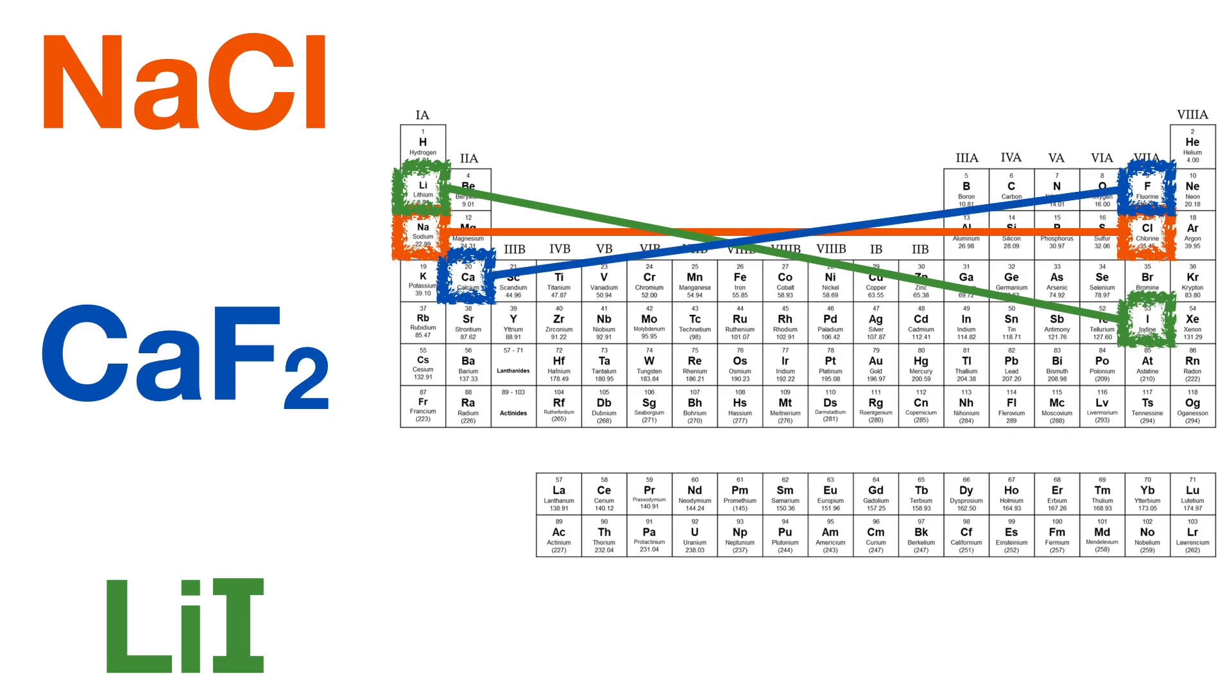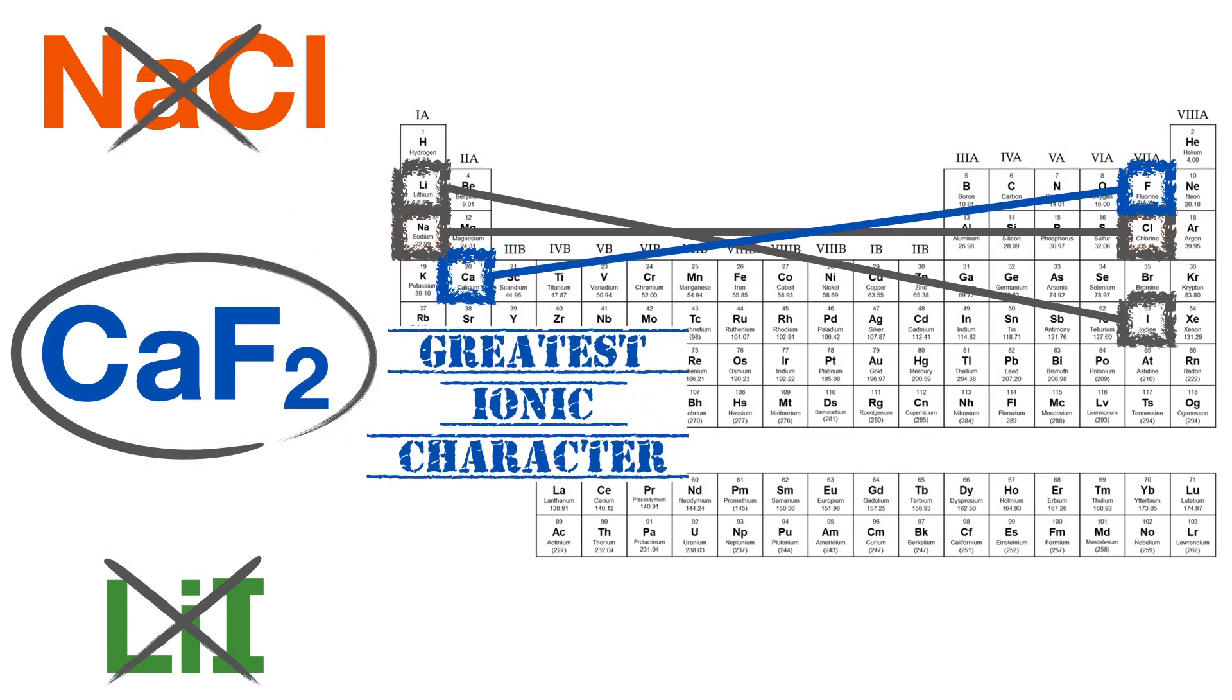And the most positive slope will simply be the steepest slope pointing upward from left to right. So eliminate any salts with a negative slope and eliminate any salts with a zero slope, or just choose the salt with the greatest positive slope as the one with the greatest ionic character.